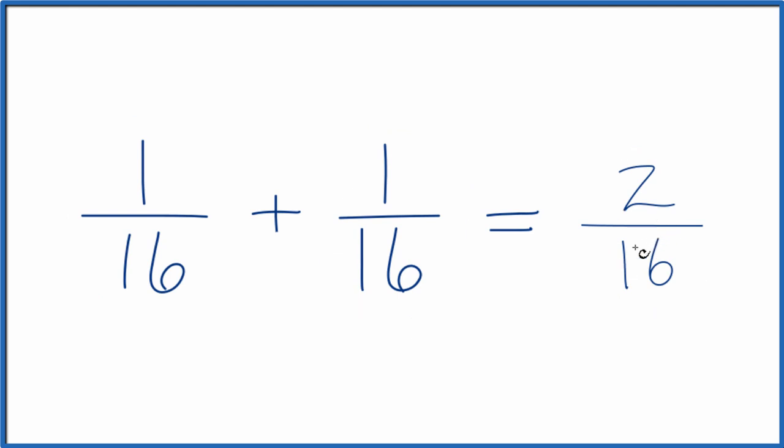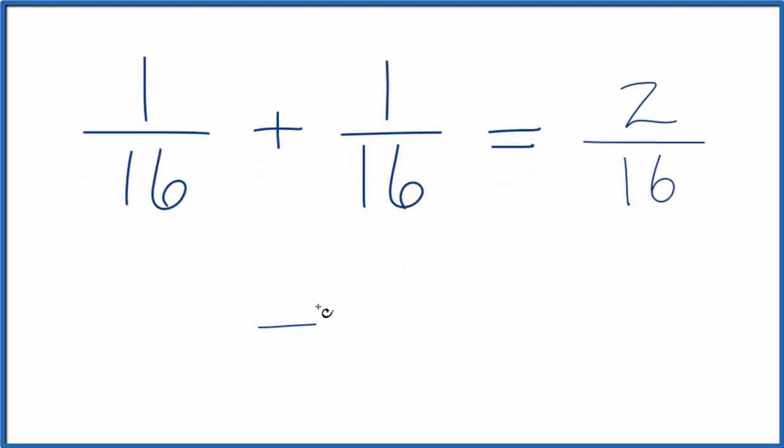We can simplify 2/16 down further because we can divide 2 into 2. That goes in 1 time. 2 into 16 goes in 8 times. So 1/16 plus 1/16, that also equals 1/8. This is the simplest form.